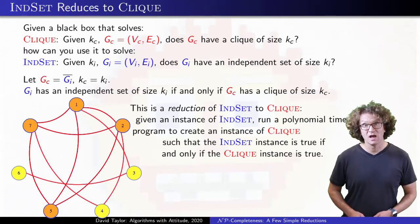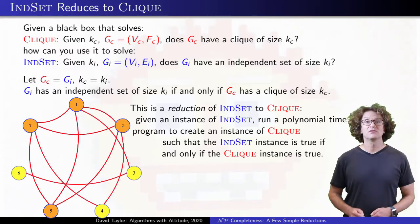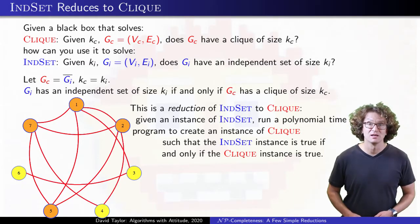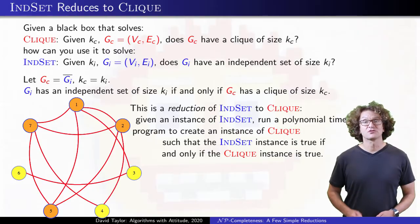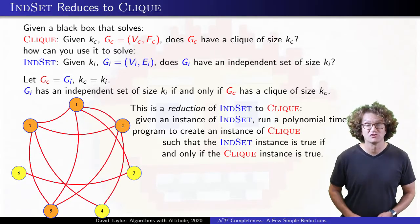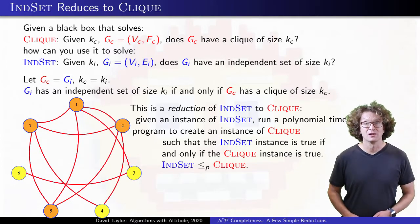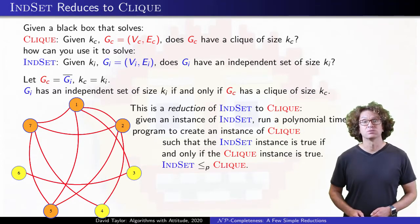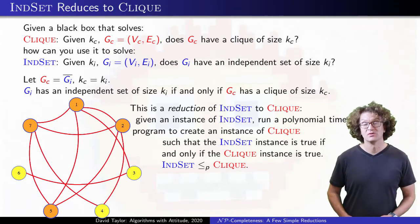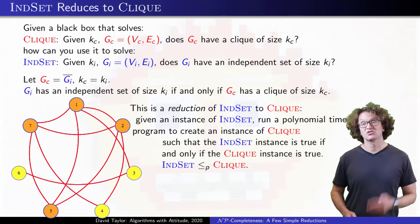There are a few different types of reductions, but this is the type we are going to care about here. Given an instance of independent set, in polynomial time we can create an instance of clique such that the original problem and the new problem both have the same yes or no answer. We symbolize that where the less-than-or-equal sign implies that the independent set isn't harder than the clique problem, because the clique problem can be used to solve it.